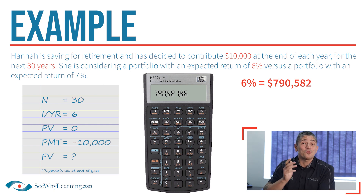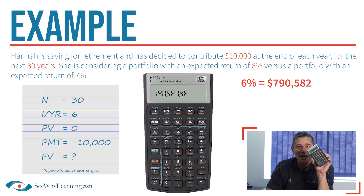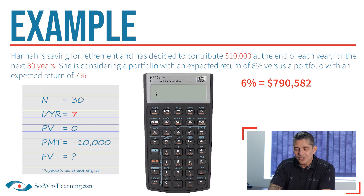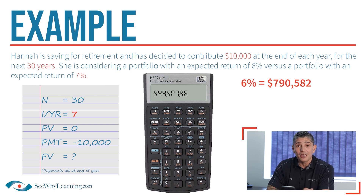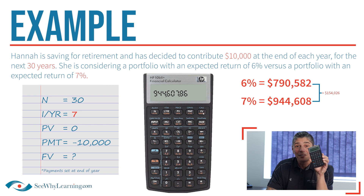Now what if Hannah selects the riskier investment and it generates the expected return of 7%? This is what I really love about this calculator, because I don't have to re-enter everything. All I need to do is change the one variable. So I enter 7, I/YR, and then press FV, and arrive at an answer of approximately $944,608. That's a pretty big difference.